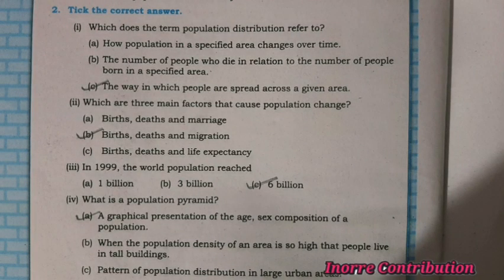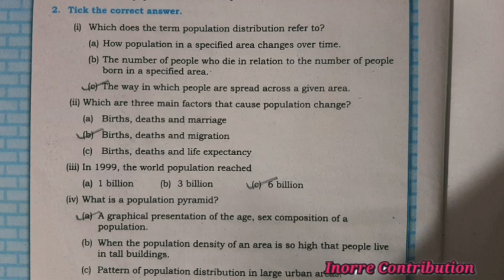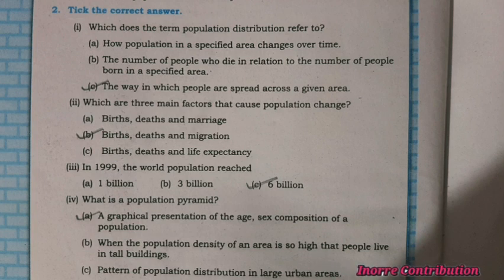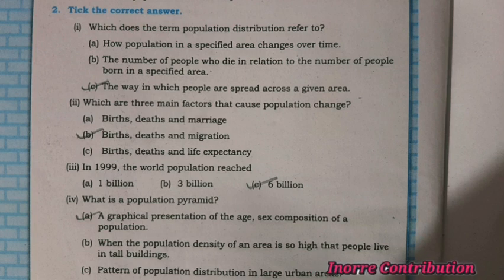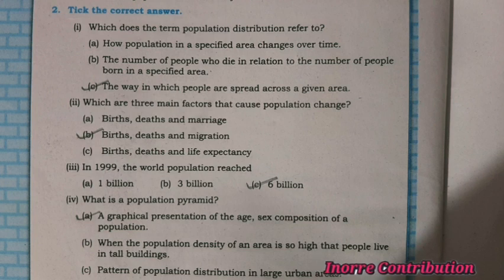Question 2: tick the correct answer. First, which does the term population distribution refer to? Correct option is C — the way in which people are spread across a given area. Second, which are the three main factors that cause population change? Correct option is B — birth, death and migration. Third, in 1999 the world population reached — option C — 6 billion. Fourth, what is a population pyramid? Option A is correct — a graphical presentation of the age and sex composition of a population.